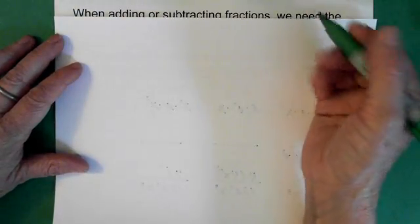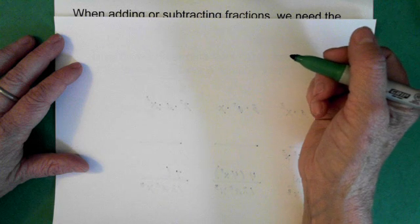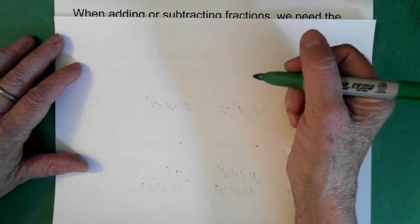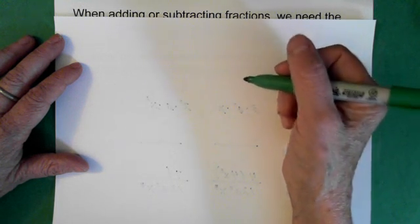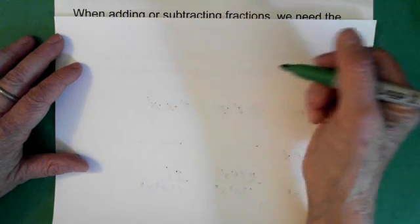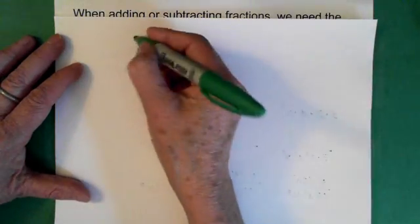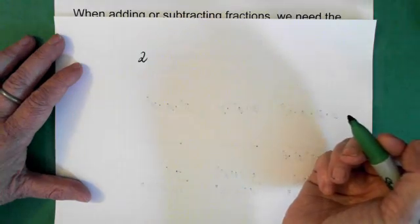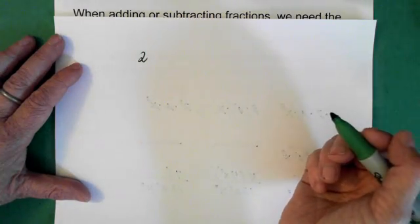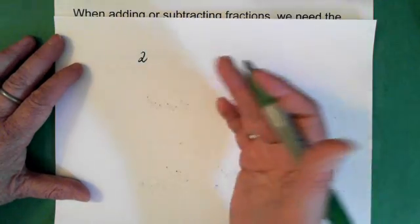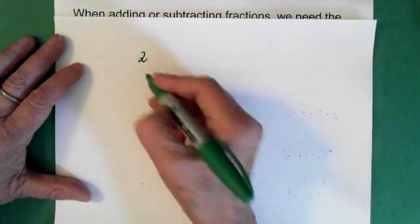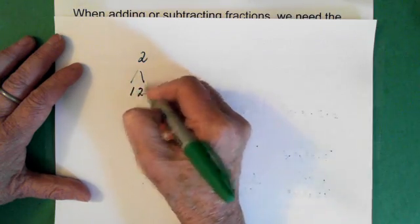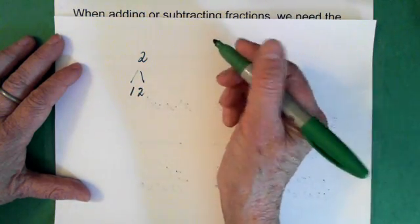What is a prime number? A prime number is any number that has only two factors, and those factors being one and itself. An example of that is the number 2. The factors of 2, or the things that multiply together to give us 2, are 1 and 2. So this is a prime number.